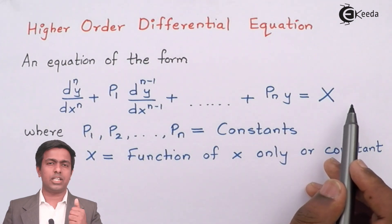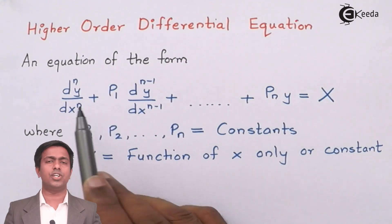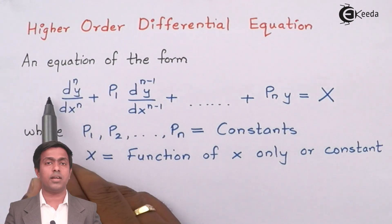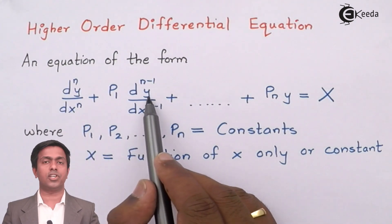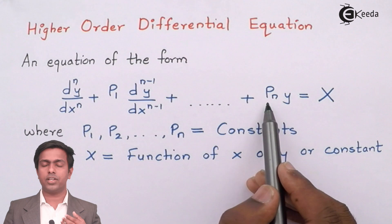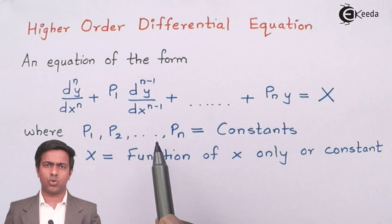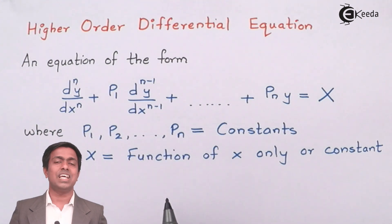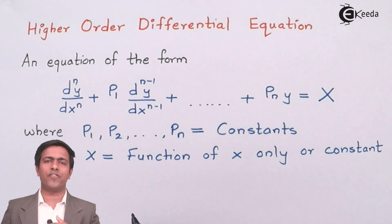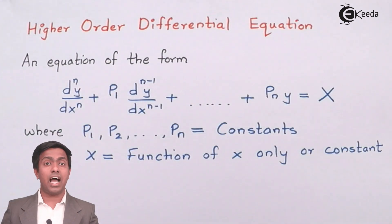If you observe this equation, there is one more thing present — the coefficient. Just observe the coefficient of each differential term. The coefficient of the first term is 1, the coefficient of the second differential term is p1, then for the next term it is p2, and at the end we have the coefficient pn. Here p1, p2, and so on till pn are constants, meaning the coefficients of the differential equation are constant.